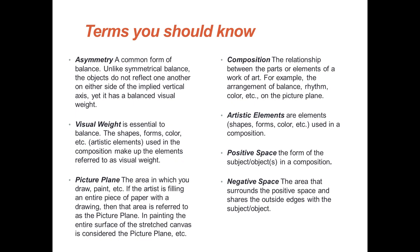Picture plane is the area in which you draw, paint, etc. If an artist is filling an entire piece of paper with a drawing, that's referred to as the picture plane. Painting an entire stretched canvas surface is also the picture plane. Composition is the relationship between the parts or elements of a work of art — for example, the arrangement of balance, rhythm, color, etc., on the picture plane.